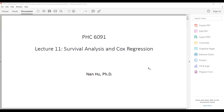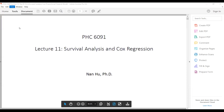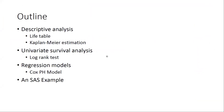Hi everyone, this is the last lecture of PHS 1691 Biostatistics II in the spring 2020 semester. The topic is survival analysis and Cox regression. The outline includes: descriptive analysis of survival data, covering the life table to estimate the survival curve, and the Kaplan-Meier estimation for a survival curve or cumulative incidence estimation, and briefly the univariate survival analysis from the log rank test.